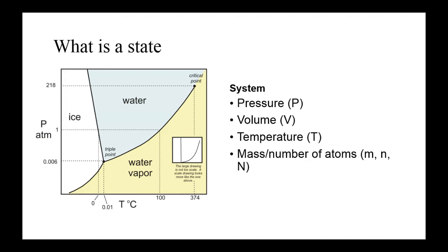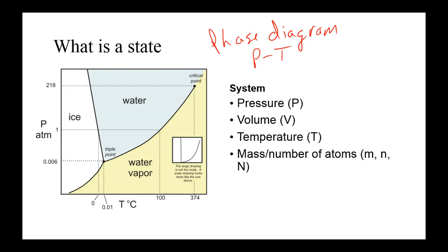We've actually been looking at state variables in the last couple of lectures — specifically, changing the phase of matter, going from solid to liquid to gas phases. Usually we indicate the connection between pressure, temperature, and phase with a phase diagram. The phase diagram we use has pressure versus temperature. You could also have different phases, for example magnetic phase transitions, where you would have the magnetic field versus temperature. But we're going to limit ourselves to thermodynamic states today.